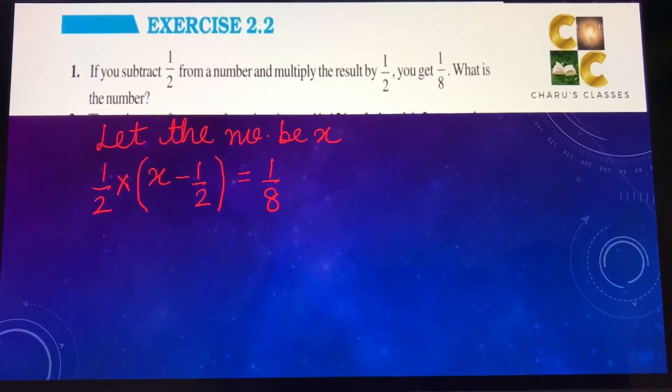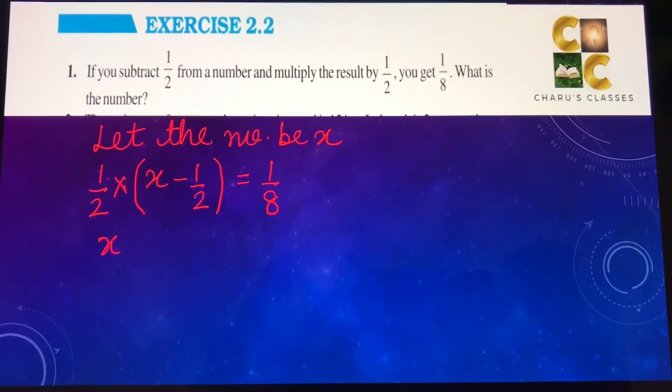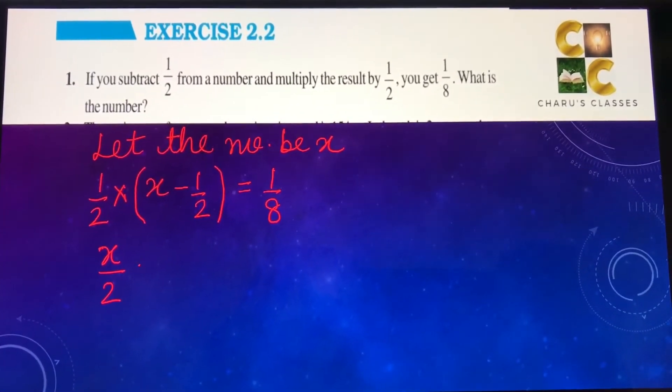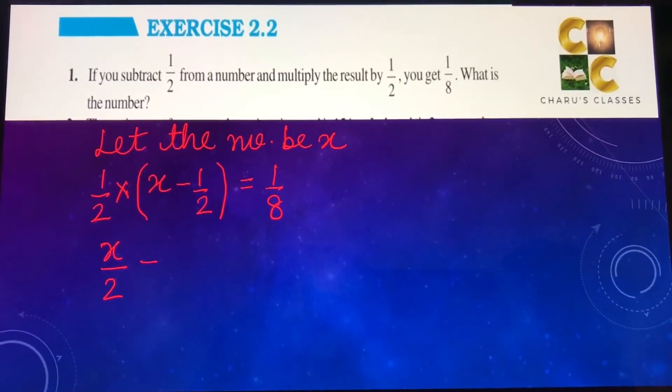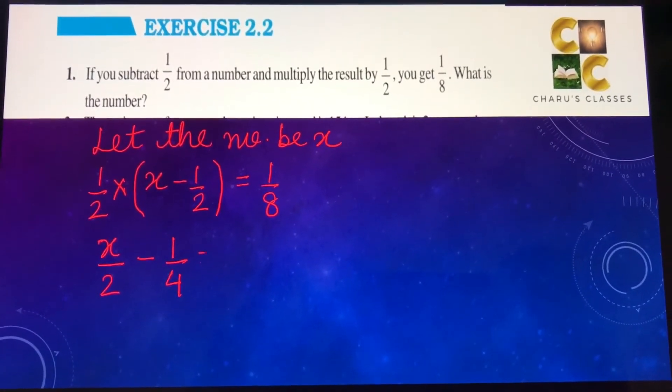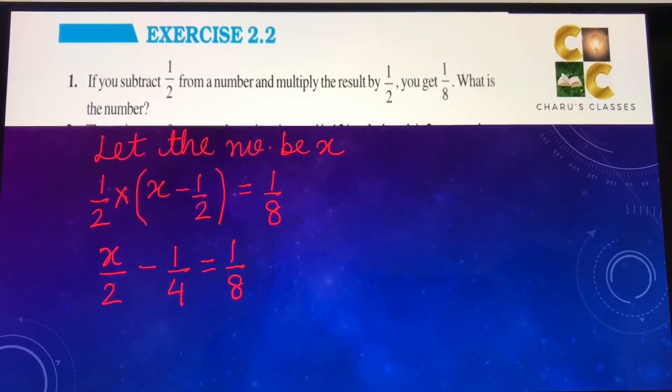So multiplying it, we get half into x, that is x by 2, into minus half into half, that is minus 1 by 4, is equal to 1 by 8.